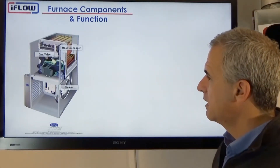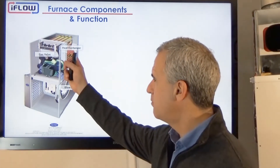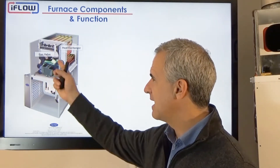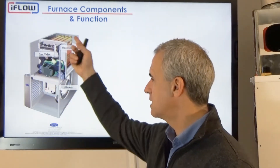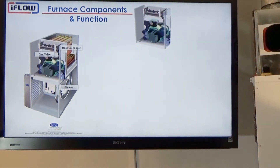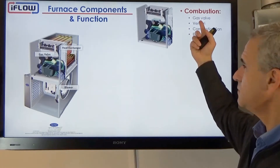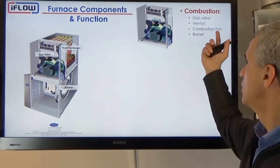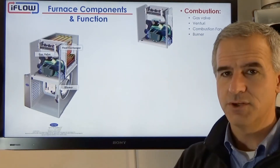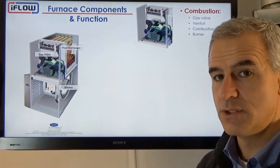A gas furnace has three basic component functions. We have the gas valve in that assembly, we have the heat exchanger assembly, and then we have the blower. The combustion side includes the gas valve, the ventry, the blower, and the burner. This is what takes the source energy — the natural gas or propane — and converts it to heat.